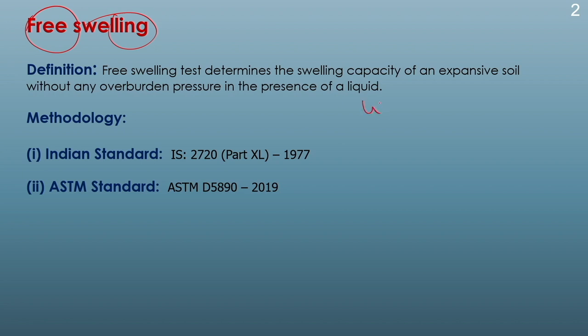This liquid can be water or any salt solution for which we need to determine the free swelling. There are two methods available: one is the Indian Standard method IS 2720 Part XL 1977, and the second method is the ASTM standard ASTM D5890 2019. Both standards are widely used — the Indian standard is used in India whereas the ASTM standard is mostly used around the world. We will learn about the procedures involved in these two methods.